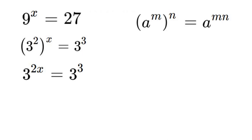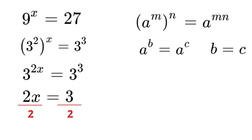Now we're going to use another exponent property. If we have a to the power of b is equal to a to the power of c, that means b is equal to c. So because our base is the same, we can set our exponents equal to each other. So 2x is equal to 3. And now all we've got to do is divide by 2, and that leaves us with x is equal to 3 over 2.